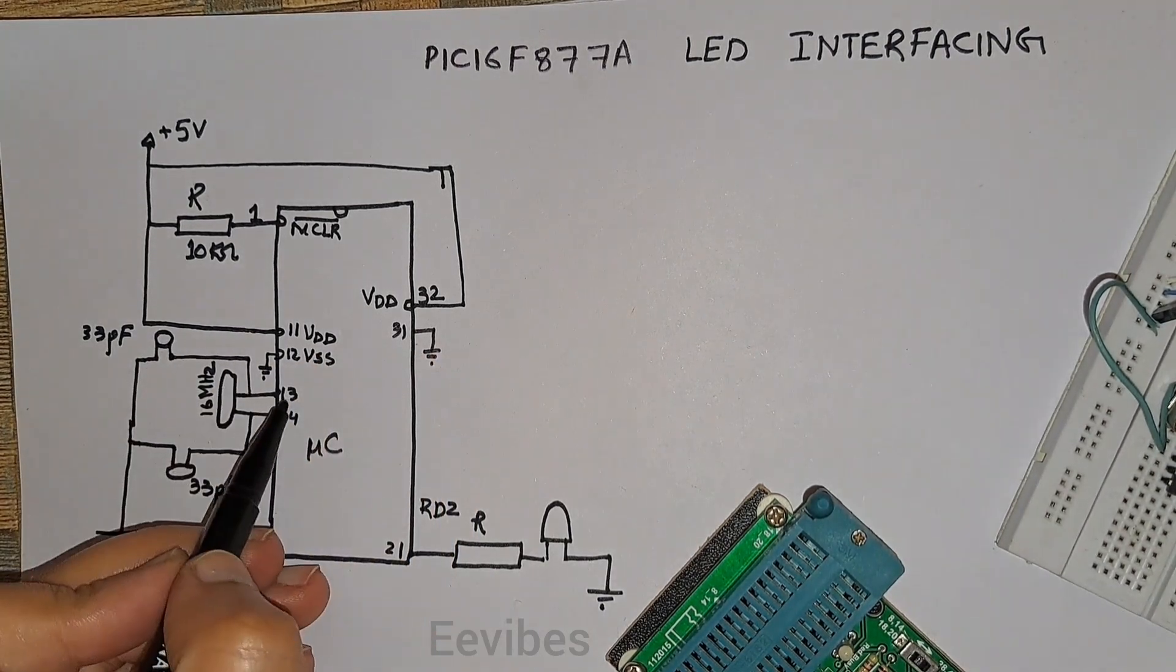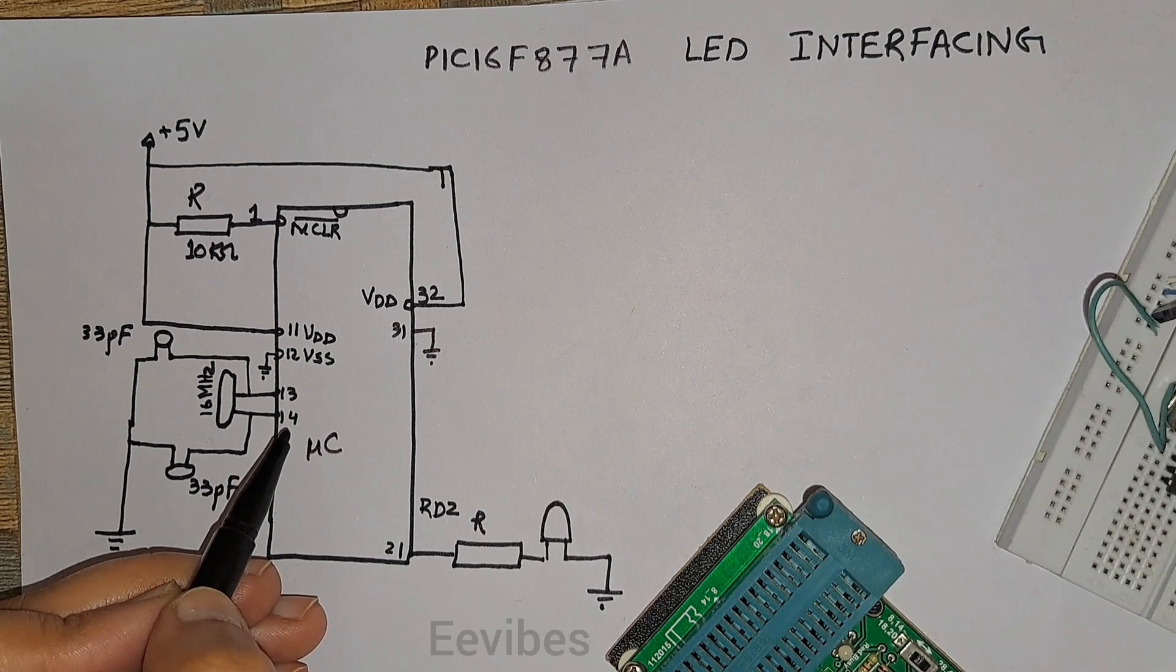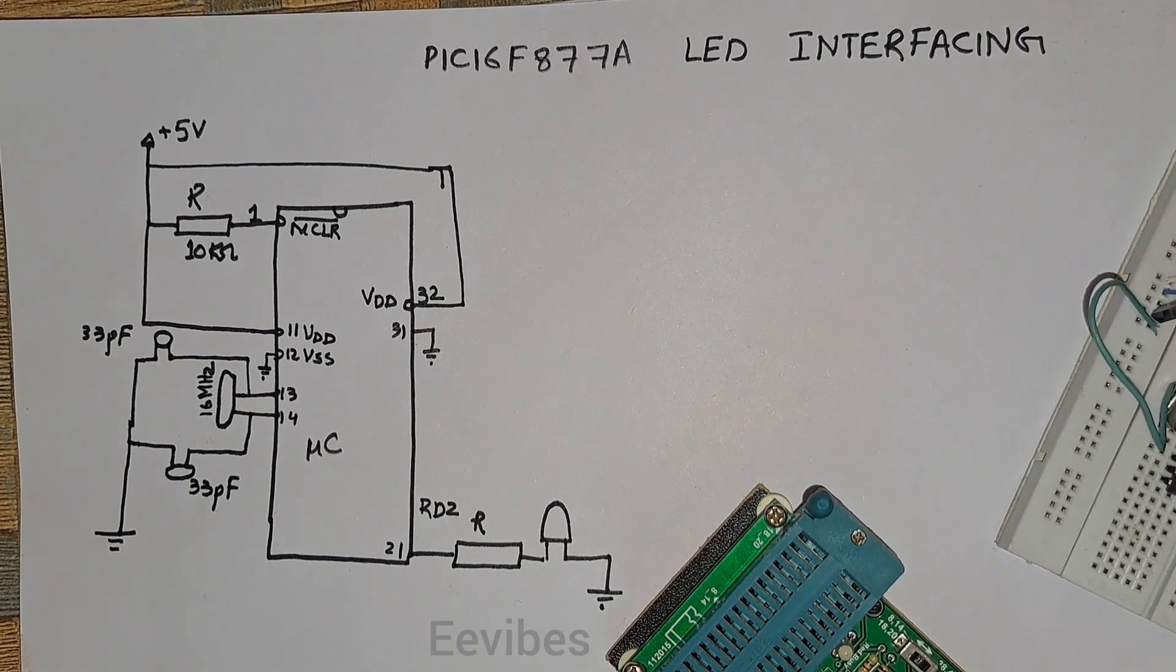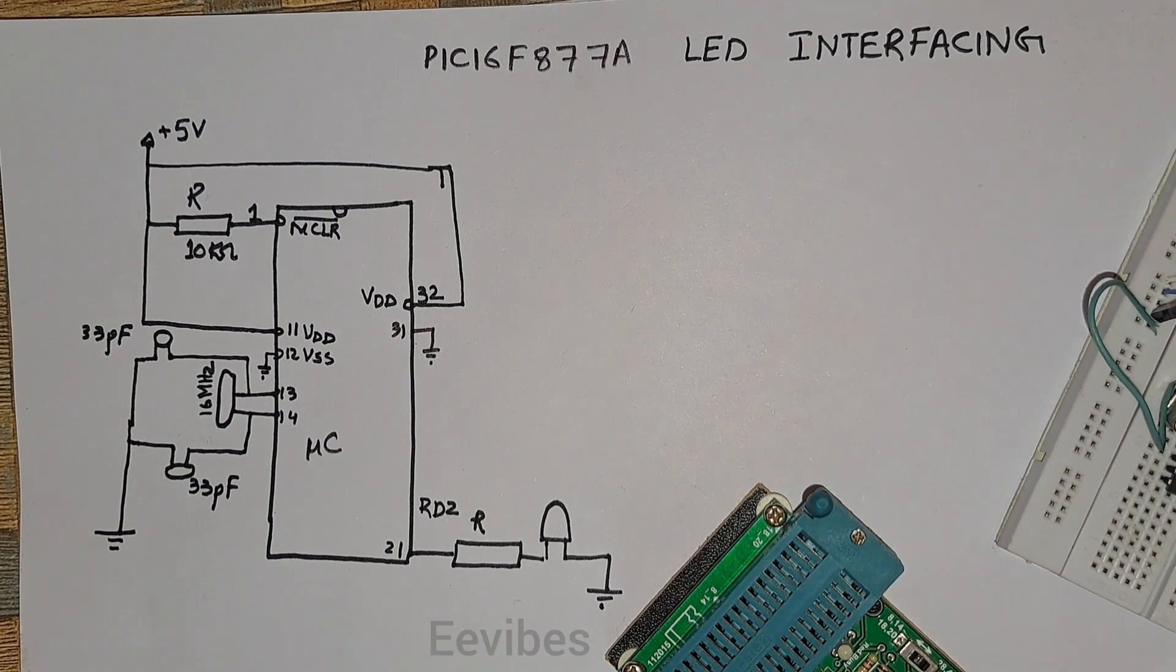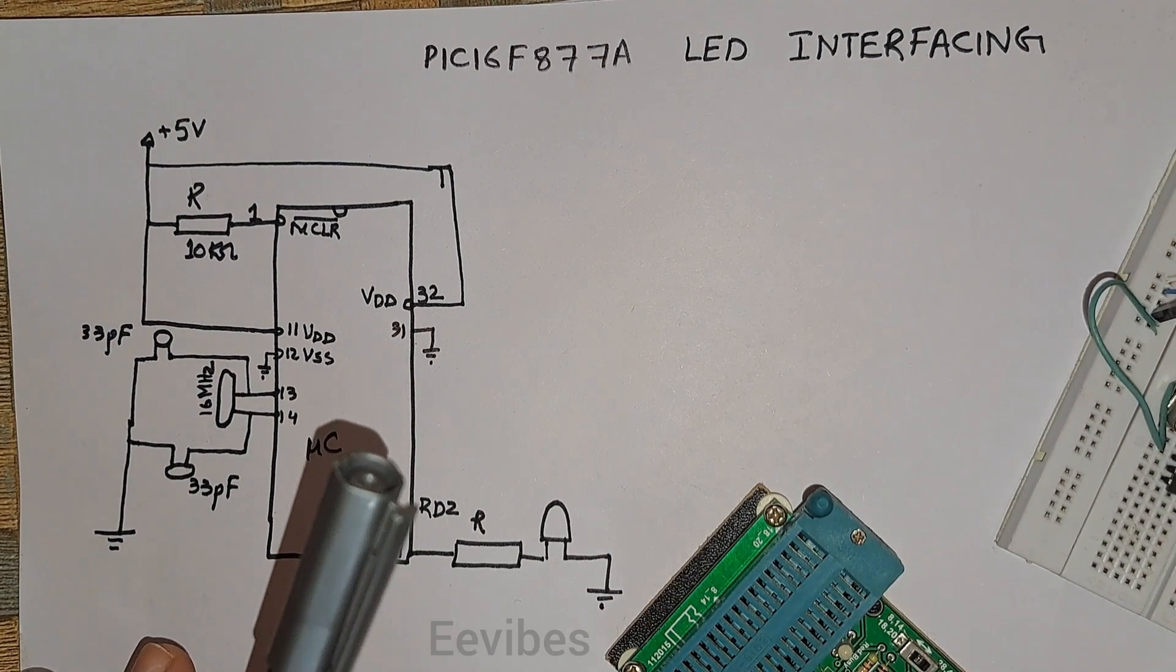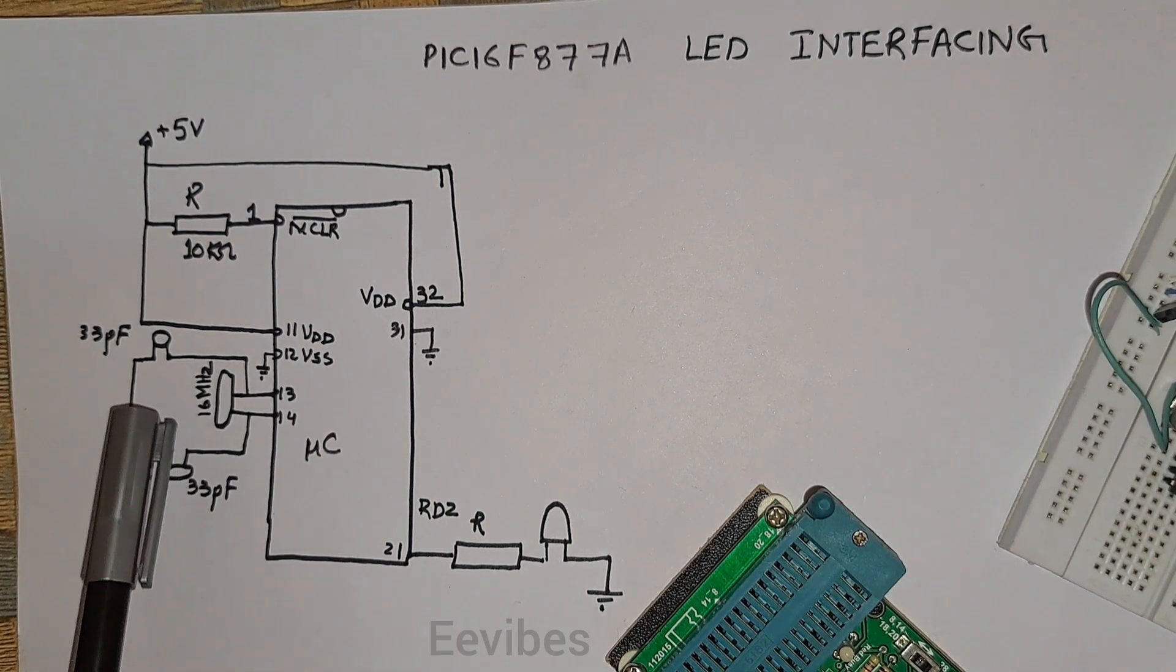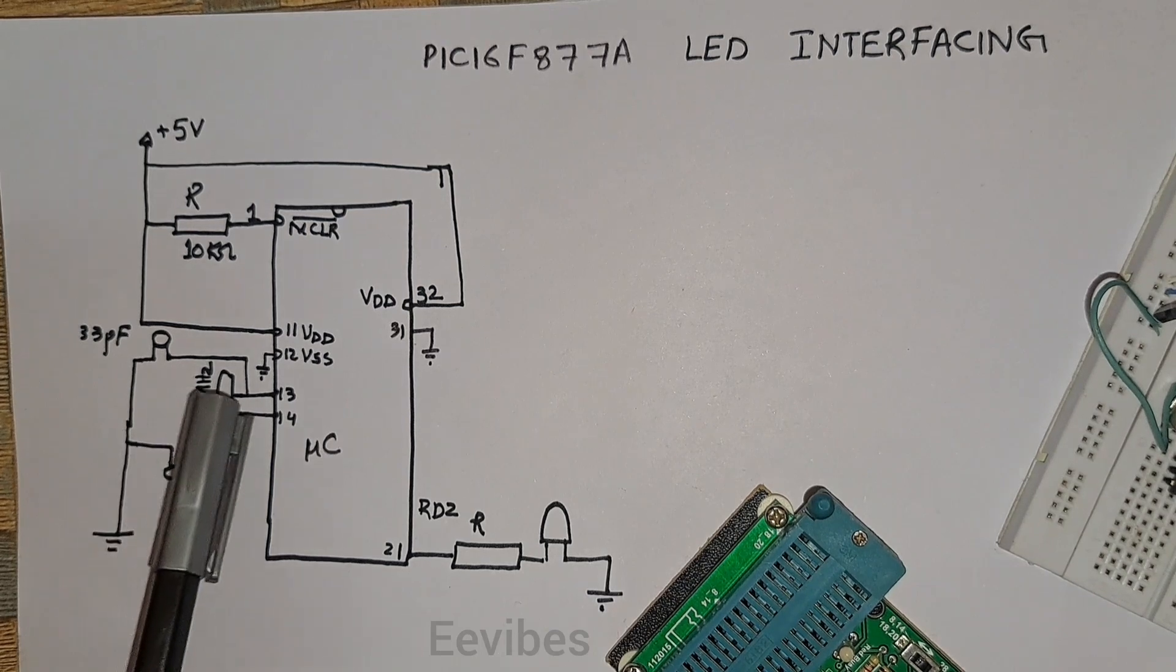Then we can see there are other connections, pin number 13 and 14. These pins are basically used for connecting the crystal oscillator. PIC microcontroller provides many options to select the clock source. Almost all PIC microcontrollers support internal oscillator, but internal crystal oscillators usually support low operating frequency. If your embedded project requires high operating frequency, you must use an external crystal oscillator. I'll connect a 16 megahertz crystal oscillator along with two capacitors of 33 picofarad.